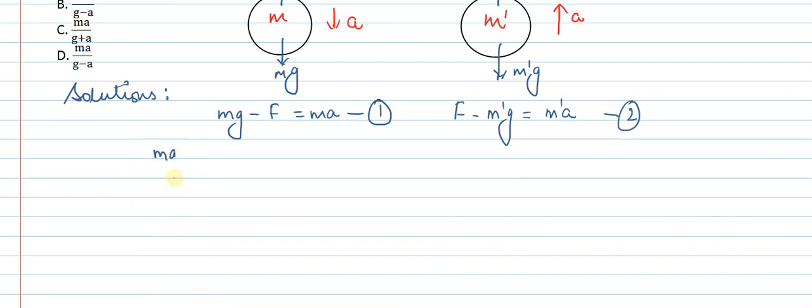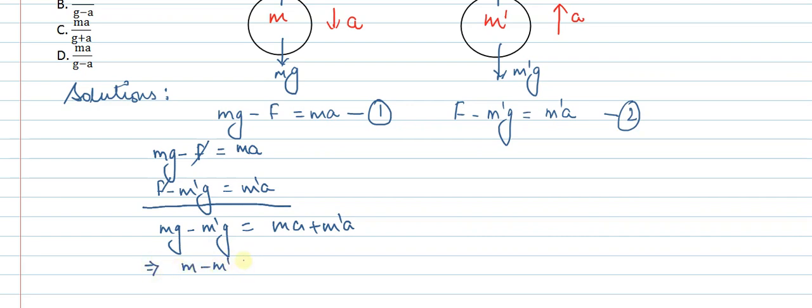We have Mg minus F equals ma, and F minus m'g equals m'a. Solving these two equations, F cancels out. We get mg minus m'g equals ma plus m'a. Now basically we need to find m₀ value, so we put m' equals m minus m₀ in our equation and solve.